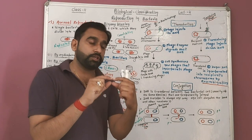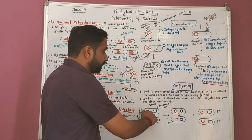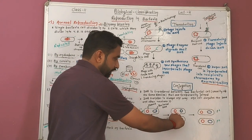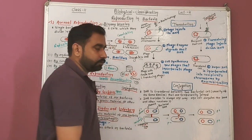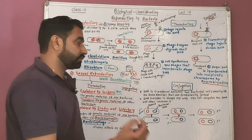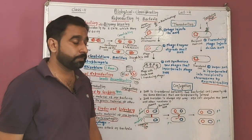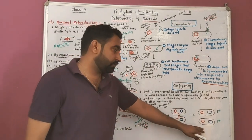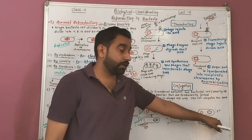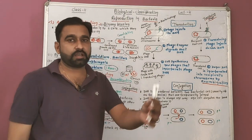Through the conjugation tube, the F-positive donor's plasmid undergoes replication and the genetic material is transferred to the receiving cell. After transfer, the conjugation tube disappears. The receiving cell then also becomes F-positive. This is the basic method of conjugation.